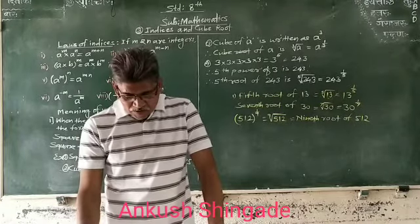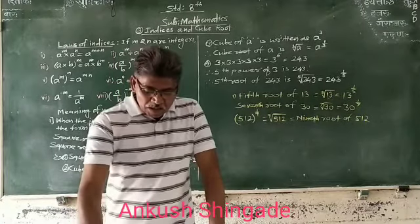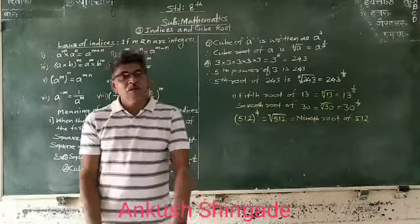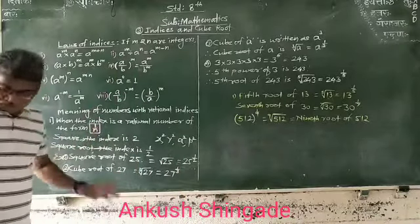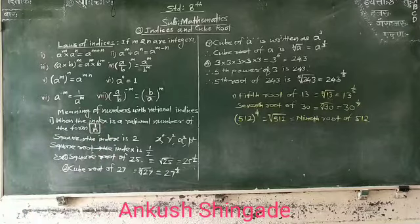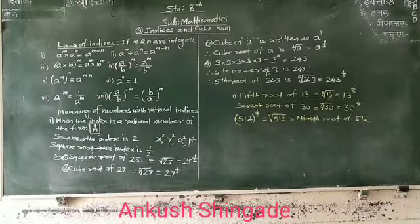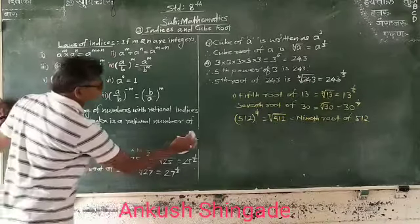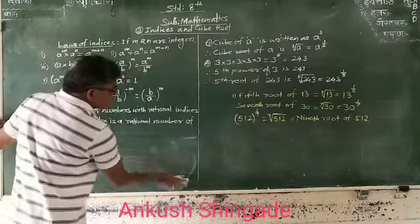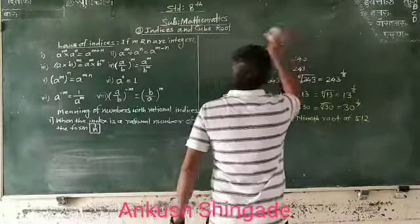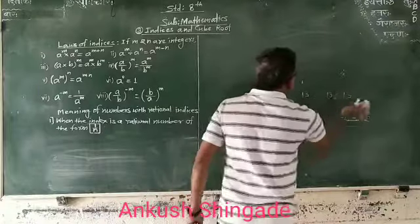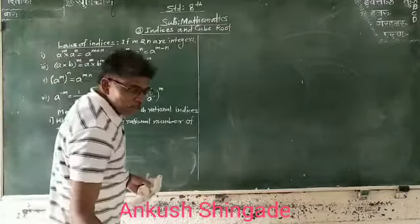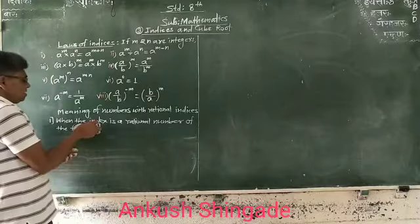So this is about the meaning of numbers when the index is a rational number of the form 1 upon N. That covers the first type of rational indices.